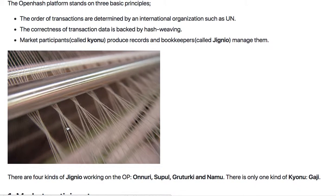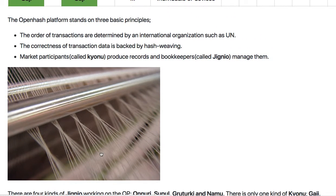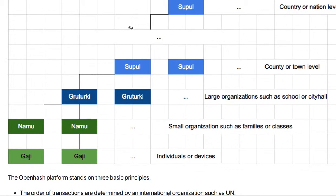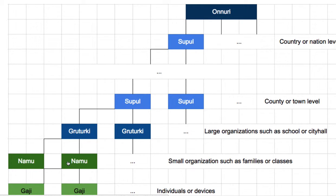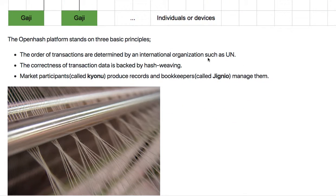This is a weaving machine. You can see strings, and each string represents a transaction. Transactions are made by market participants — one, two, or three or more market participants produce the transaction data. Those transaction data are woven together by Zignya. The role of Zignya — Namu, Grutegi, Suphul, and Onuri — is to weave transaction data together to make some kind of picture, design, or pattern.